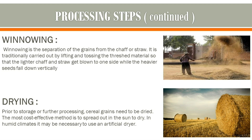Let's move further to winnowing. Winnowing is a separation of the grains from the chaff or straw. It is traditionally carried out by lifting and tossing the threshed materials so that the lighter chaff and straw get blown to one side, while the heavier seeds fall down vertically. You can refer to this image for further clarification.